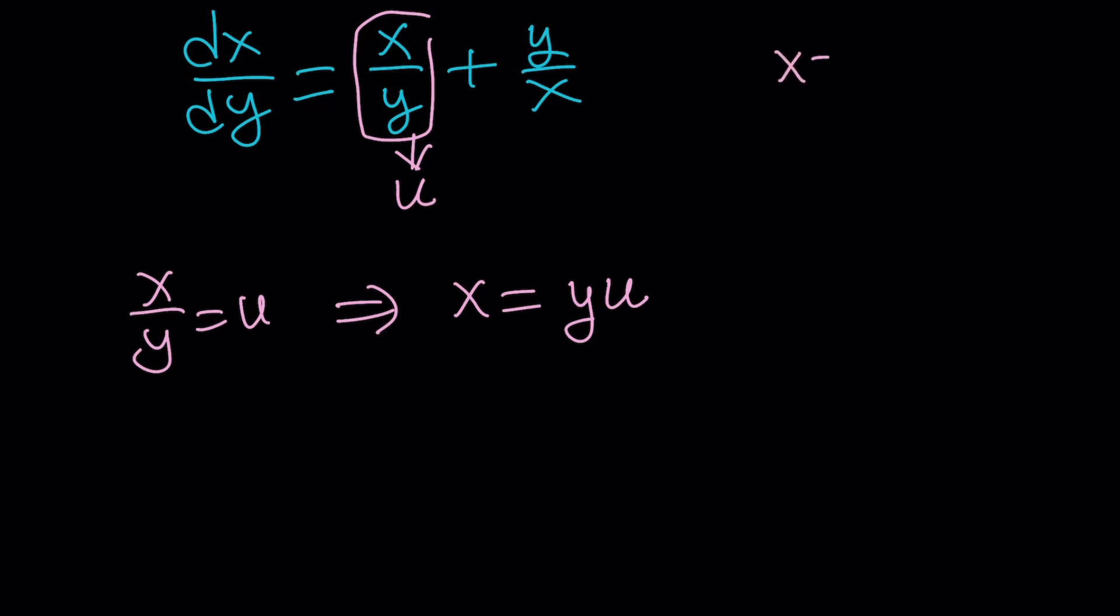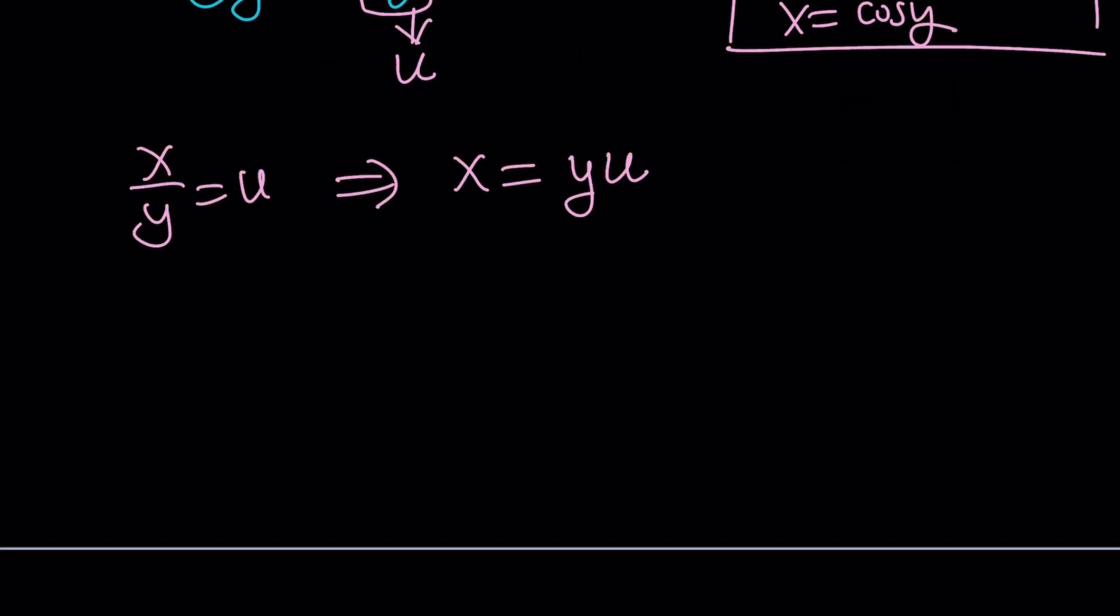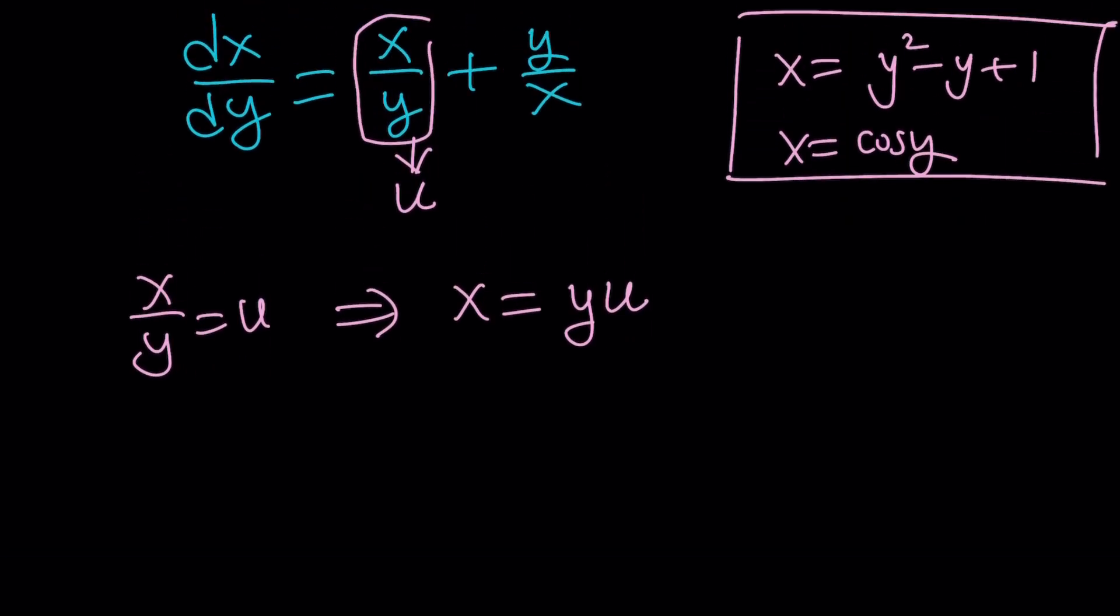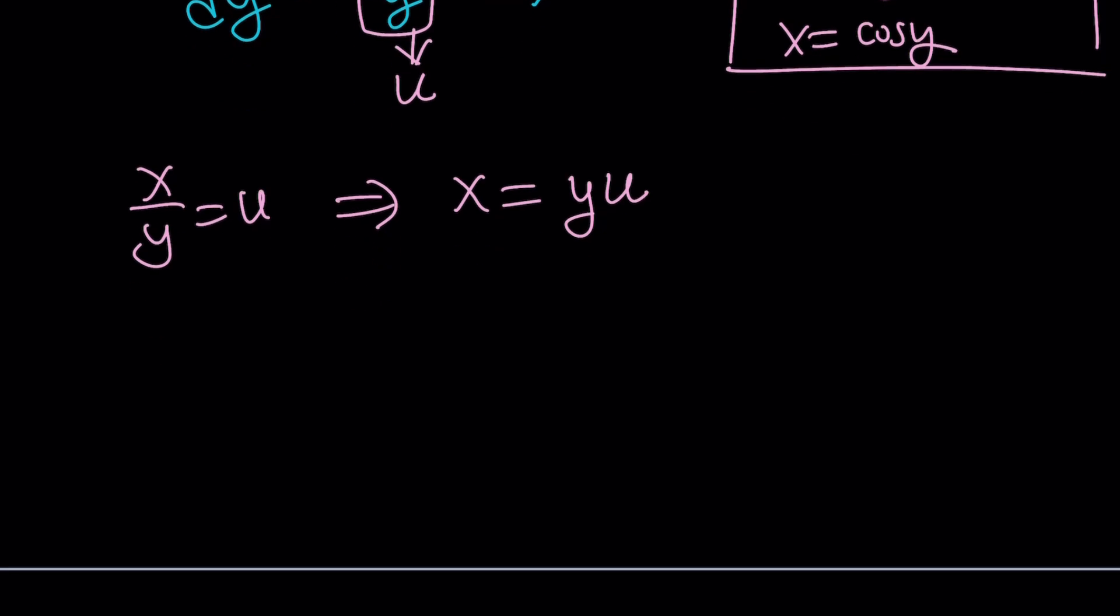And we need to think about it this way. Like, for example, the answer could be something like x = y² - y + 1. Make sense? x is a function of y. Or it could be x = cos(y) as opposed to y = cos(x). Get it? Okay, great. Now, we're talking about inverse functions here.